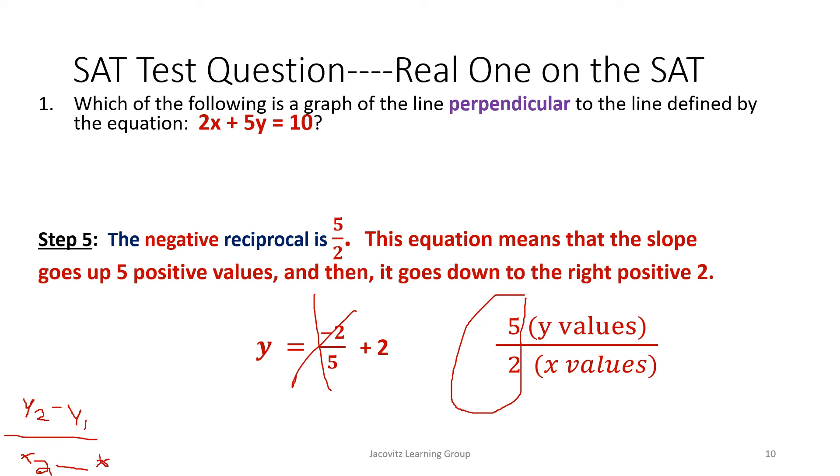Your top part, or your y values, is seen here, and your bottom part, or your x values, is seen here. Technically, since they're both positive, this means when you're on the graph, if you see a point, you go up five because your y values are always going up vertically or down negatively. You're going to go up five, and because these values are over to the right, you're going to go right two.